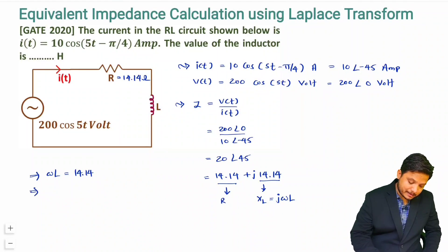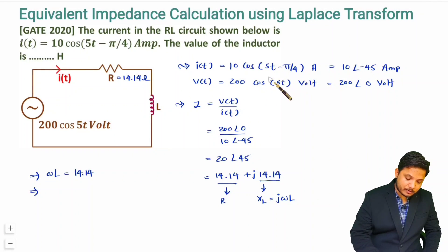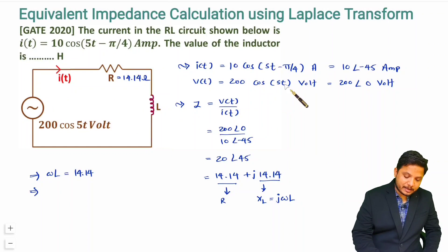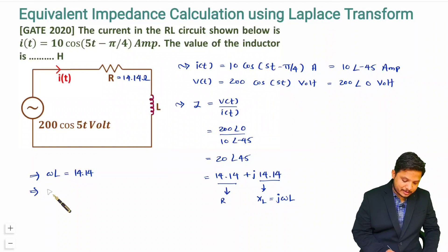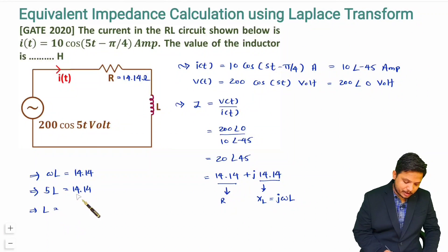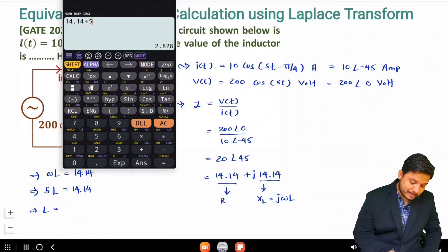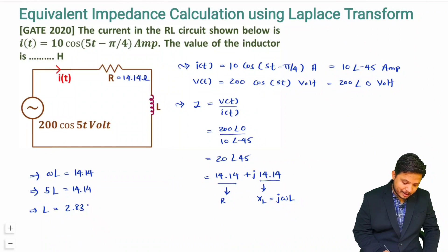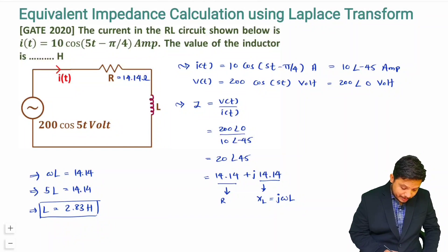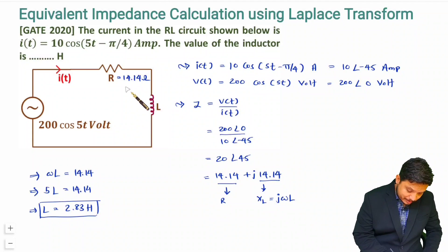Looking at the signals, both cos(φt − π/4) and cos(φt) have ω = φ. Substituting ω = φ into ωL = 14.14, we get L = 14.14/φ = 2.828 ≈ 2.83 henry. This is how we identify the unknown values of inductor and resistor.